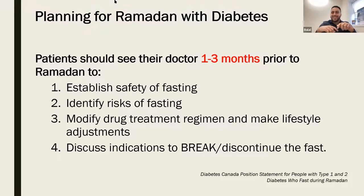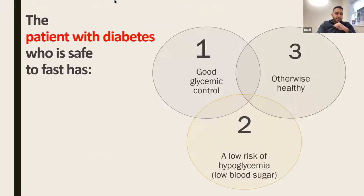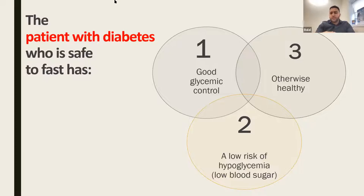You want to talk about the safety of fasting, the risks associated, and very importantly, when to break the fast and discontinue fasting if needed. The patient with diabetes who is safe to fast ideally has well-controlled glycemic control — their diabetes is very well managed. They are otherwise pretty healthy and have a low risk of hypoglycemia, meaning low blood sugar. This means they're at low risk due to their job and due to the medications they're on.